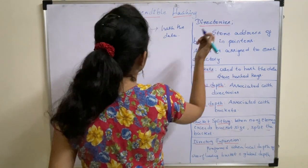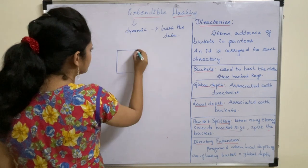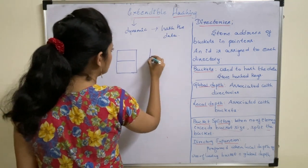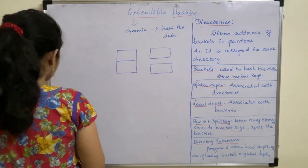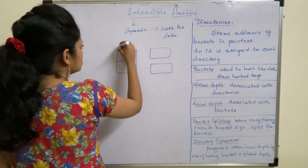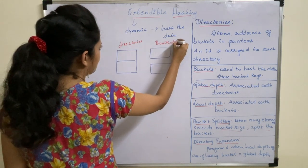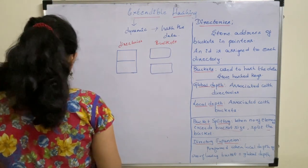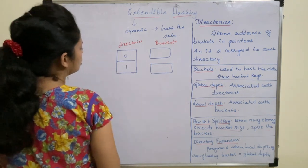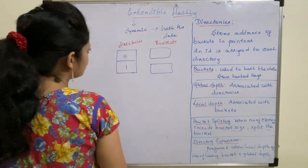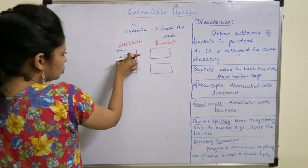Let us draw how the hash frame looks initially. This is the initial representation of a hash frame — these are the directories and these are the buckets. The directory is mainly used to store the address of the buckets, so the address of each bucket is stored in the directory.